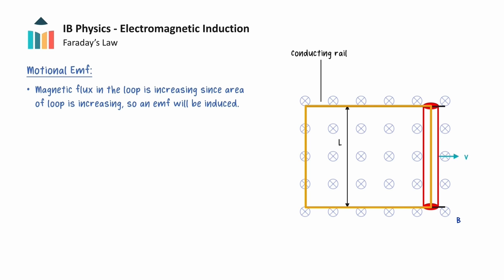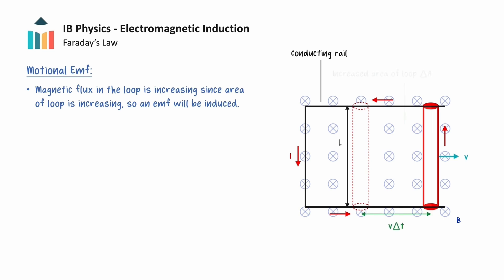In addition, since we have a closed conducting loop, a flow of charge will occur due to the induced EMF, resulting in a current being induced in the circuit, and it will have an anti-clockwise direction due to Lenz's law. In a time interval delta T, the rod has moved the distance V times delta T, so the change in area of the conducting loop delta A will be given by this distance V delta T multiplied by the length of the rod L.